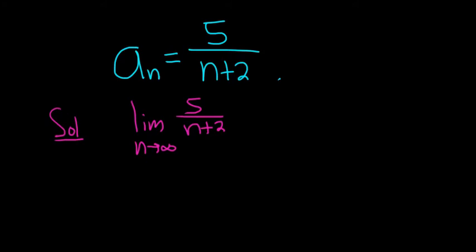So the idea here is that in the numerator, you have a constant. So it's fixed, right? It's 5. And the bottom is getting really, really, really big.